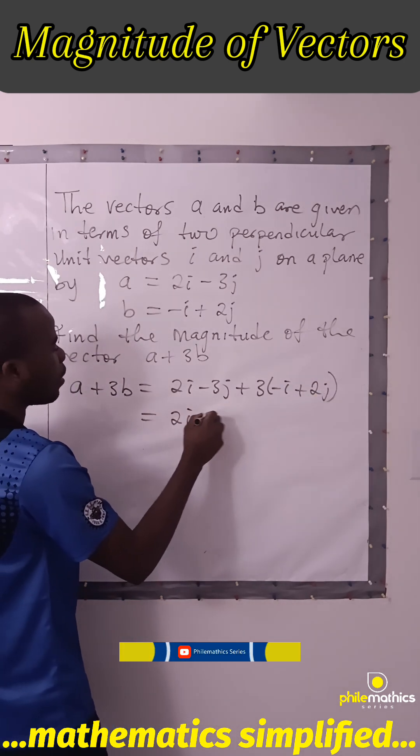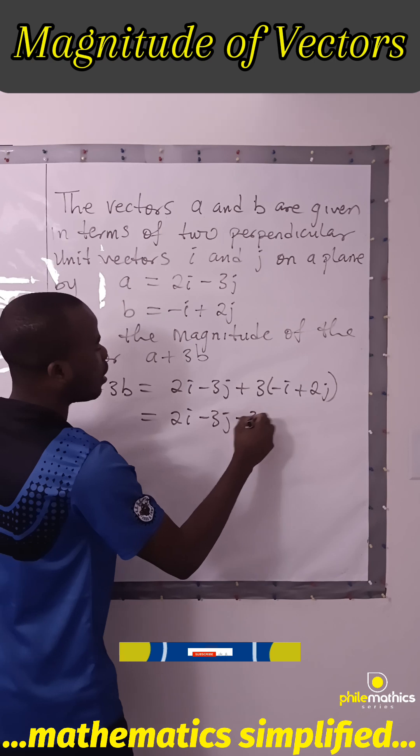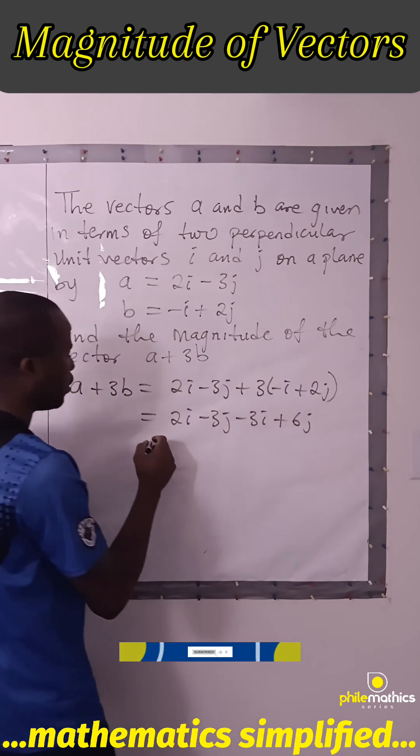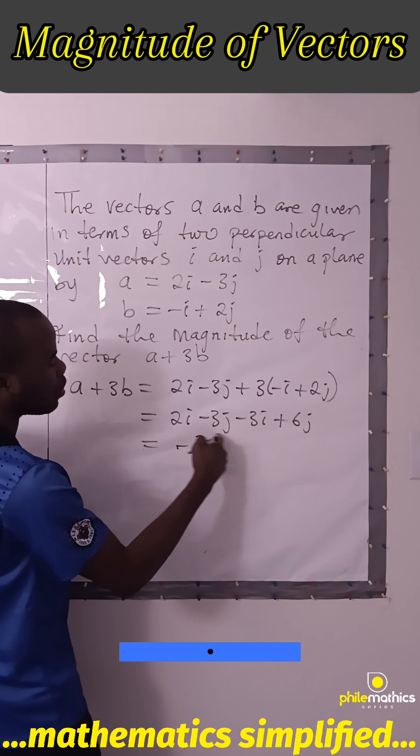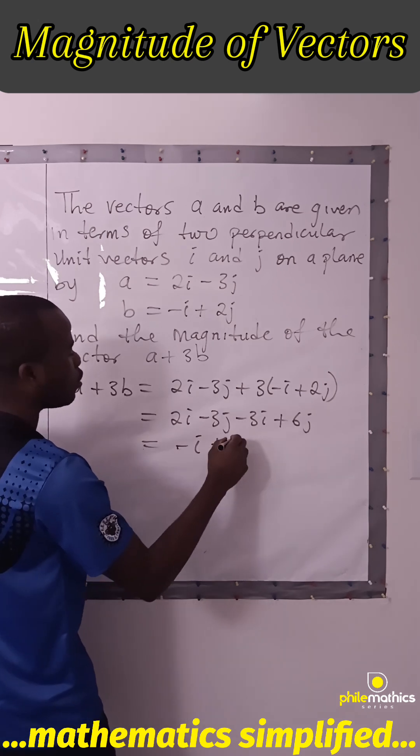This is 2I minus 3J minus 3I plus 6J, and 2I minus 3I is minus I, minus 3J plus 6J is plus 3J.